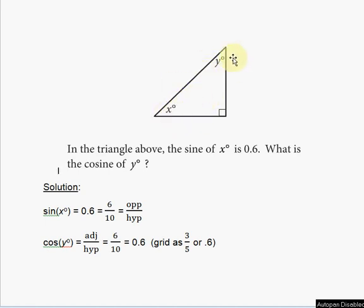If you know that property, you can actually avoid all this work and arrive at the answer 6 over 10. Since X plus Y equals 90, sine of X equals cosine of Y. For example, sine of 45 equals cosine of 45, sine of 30 equals cosine of 60, and sine of 60 equals cosine of 30.